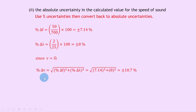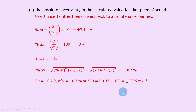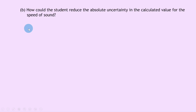Since v equals f lambda, the percentage uncertainty in speed equals the square root of (7.14² + 8²), which gives ±10.7%. To find the absolute uncertainty, we take 10.7% of 350 meters per second: 0.107 times 350 equals ±37.5 meters per second, which rounds to ±40 meters per second to one significant figure.